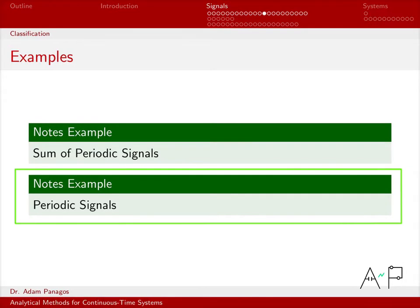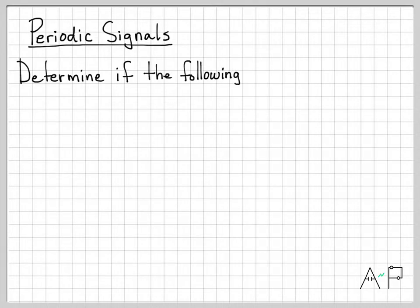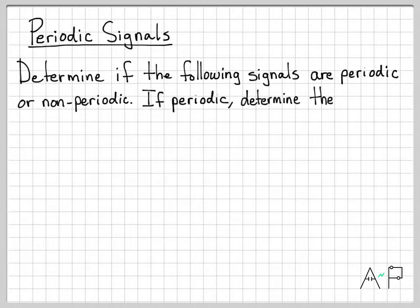So actually, we're going to work this second one first, and we'll do sums of periodic signals at the end. But let's work through some basic things first. So periodic signals, let's take a look at just a handful of different examples and figure out if they are periodic or not periodic. If they're periodic, we're going to figure out what their period actually is.